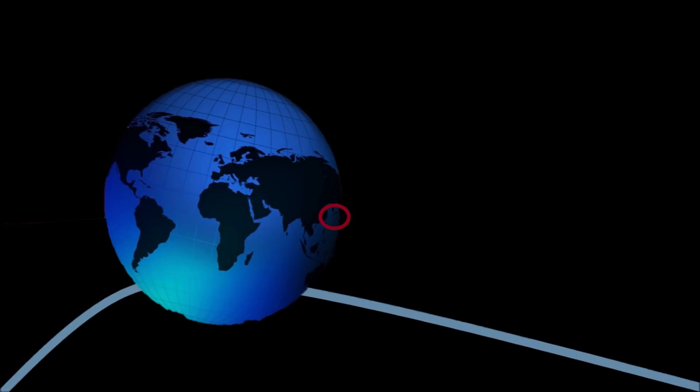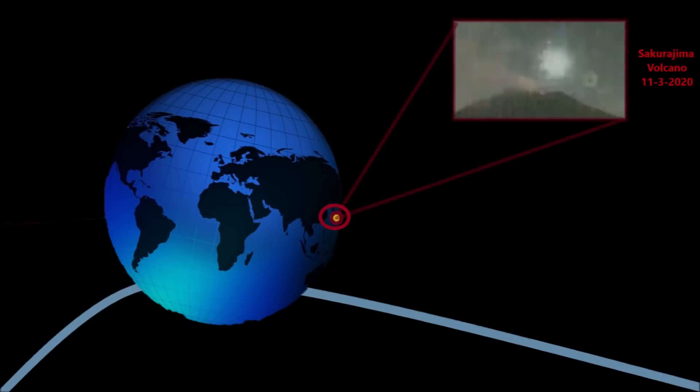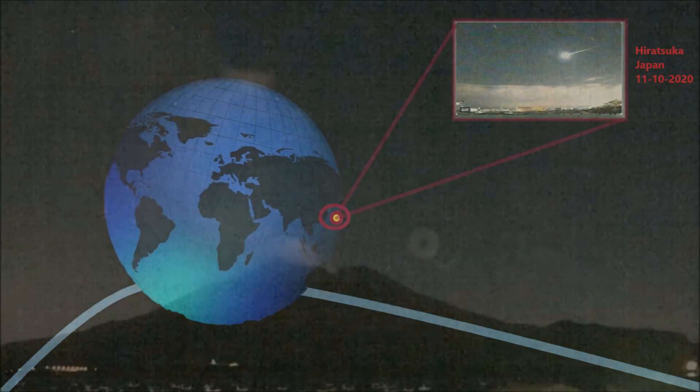This has been a busy month for prominent meteor and fireball sightings over Japan. On November the 3rd, a bright fireball exploded in the sky over Sakurajima volcano. Seven days later, on November the 10th, another fireball was sighted over the city of Harazuka, viewed from five different positions as shown on social media.